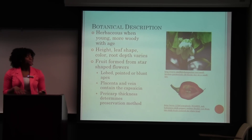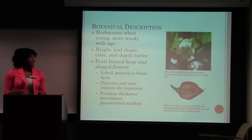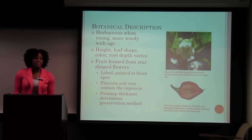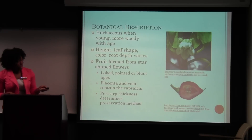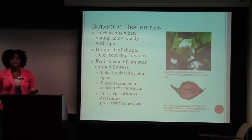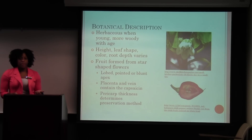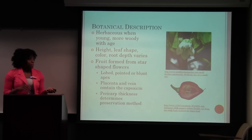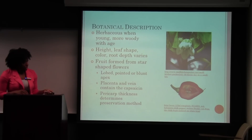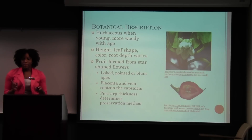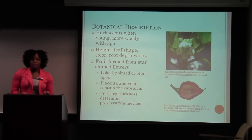Capsicum annuum is herbaceous when young, but it gets woodier with age. The height, leaf shape, color, and root depth vary based on the different varieties. The fruit is formed from star-shaped flowers, as you can see here, which are usually white but sometimes have some purple in them. The fruit can be lobed, like the bell pepper, and it can have a pointed or a blunt apex. This is a habanero pepper right here, and it has a pointed apex.